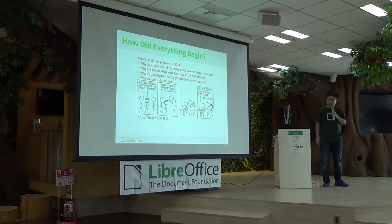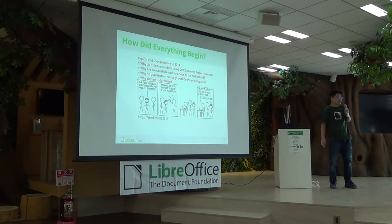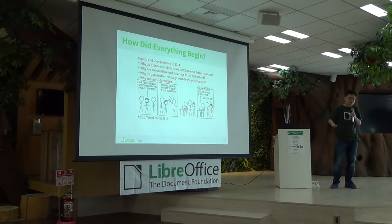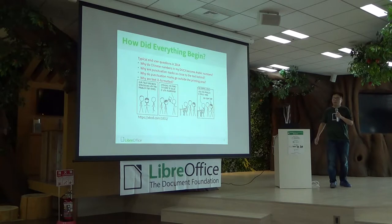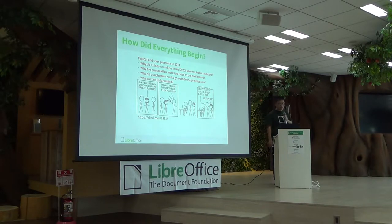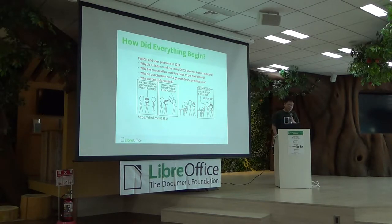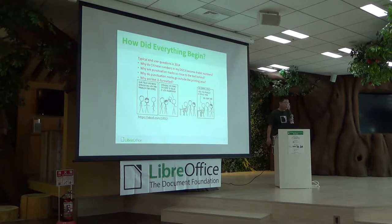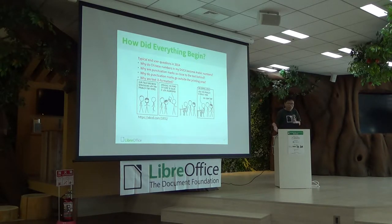I worked on promoting the migration of the office suite. At that time we had deployed OpenOffice. There were a few typical questions from end users. For example, from time to time we faced questions like: why do Chinese numbers in the numbering list in my DOCX, DOC, or RTF Microsoft format files become Arabic numbers? And why are punctuation marks so close to the text behind? And why do punctuation marks go outside the printing area? And why is the text ill-formatted?